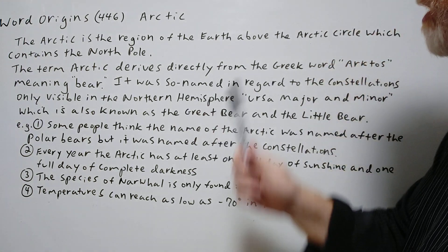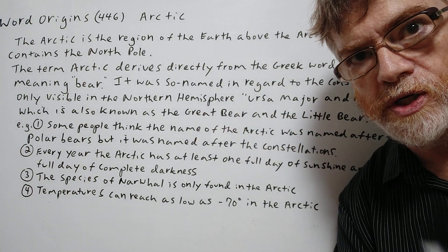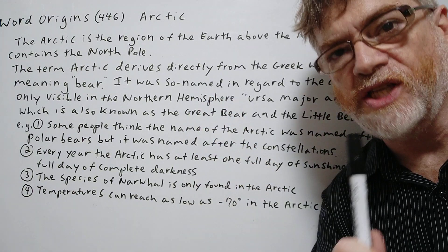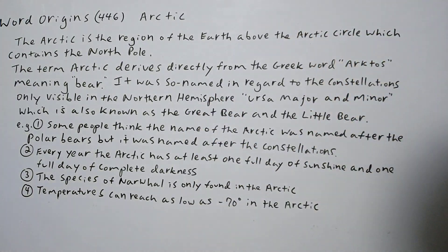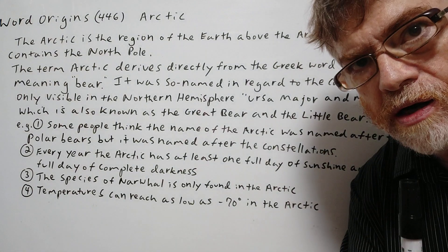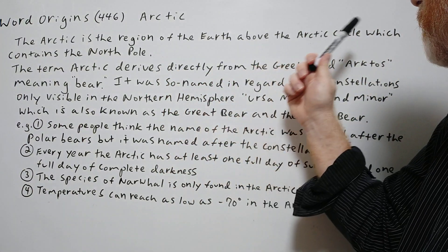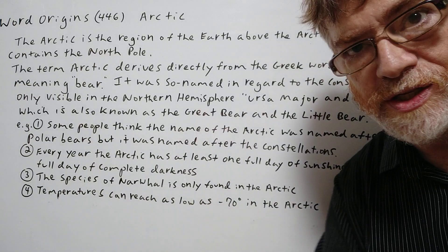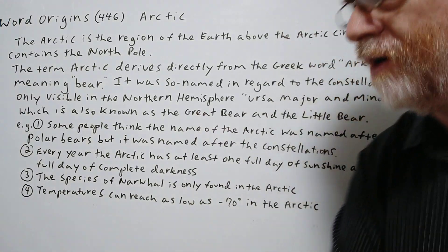Hi, this is Tutor Nick P and this is Word Origins 446. The word origin today is Arctic. The Arctic is the region of the earth above the Arctic Circle which contains the North Pole — you know, where Santa Claus is supposed to be from.